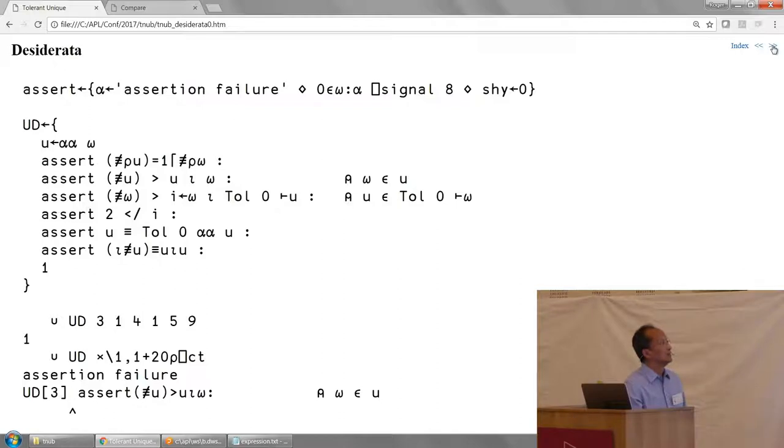The next one is that the alpha alpha function, the unique function, should be idempotent. This one is probably redundant, but I never miss a chance to use the word idempotent. It's a $10 word for saying that if you apply the unique function again you should get exactly the same thing.